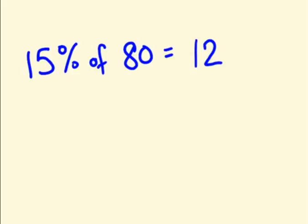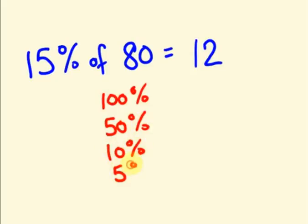All you need to do is memorize some basic formulas — or rather a small idea. First of all, let us see for 100 percent, 50 percent, 10 percent and 5 percent. So 100 percent of 80 is 80 as it is — the entire number. So 100 percent is the number itself, that is 80.